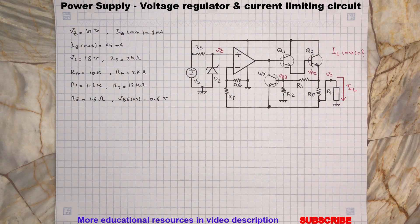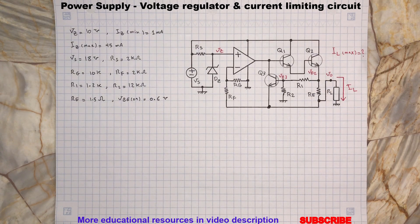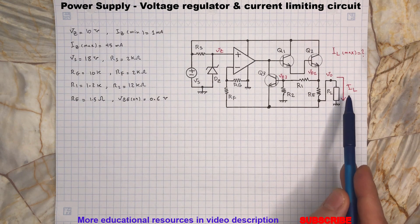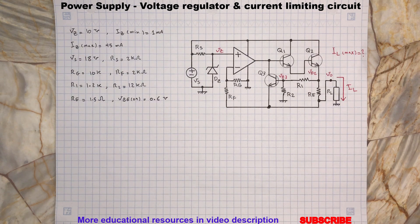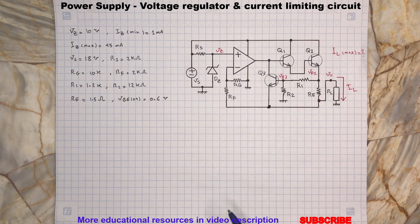The voltage divider network R1 and R2 senses the voltage at the emitter of Q2. When the output current IL reaches its maximum value, the voltage across RE becomes large enough to drive transistor Q3 on which limits the current at the base of transistor Q1, causing a limited current at the output.